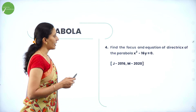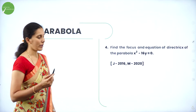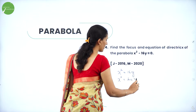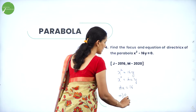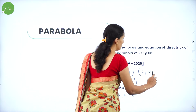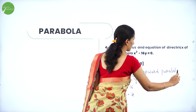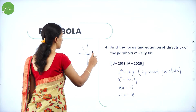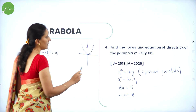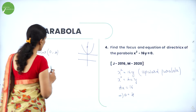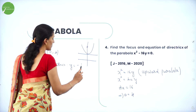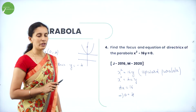Next question: Find the focus and equation of the directrix of the parabola x² − 16y = 0. We write x² = 16y, which is of the form x² = 4Ay. Comparing, 4A = 16, so A = 4. This is clearly an upward parabola. Therefore the focus is (0, 4) and the equation of the directrix is y = −4, since it lies on the negative y-axis.